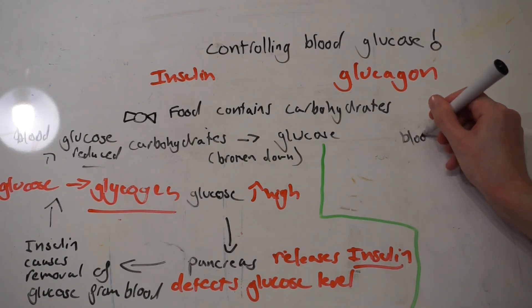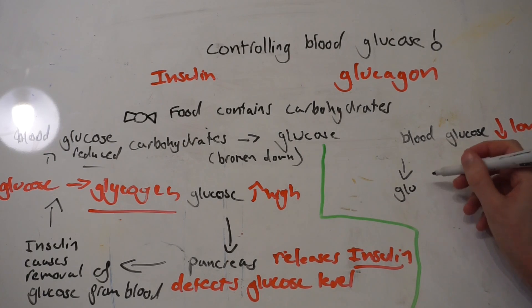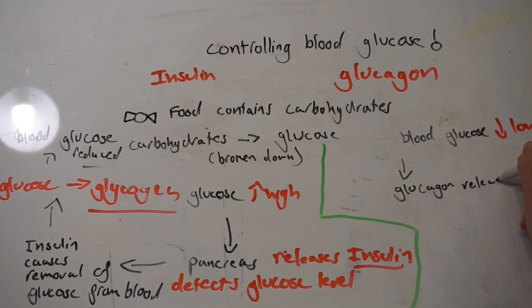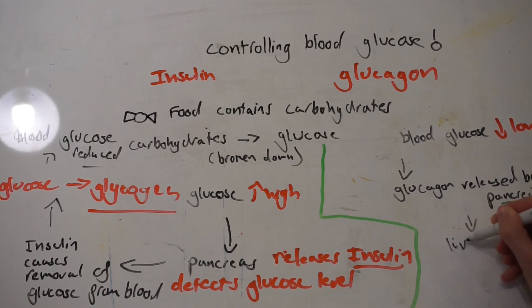We've looked at what happens when blood glucose levels are too high — insulin is released by the pancreas and causes glucose to be taken up and turned into glycogen for storage. Now let's look at what happens if blood glucose levels are too low. If the pancreas detects blood with too little glucose, it will release glucagon. This glucagon is recognized by cells, which causes them to release more glucose into the blood by breaking down the glycogen storage molecule into glucose. This glucose is then released into the blood to be used in respiration, and therefore blood glucose concentration increases.